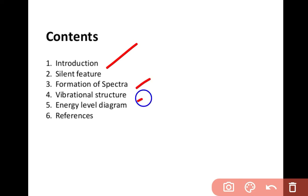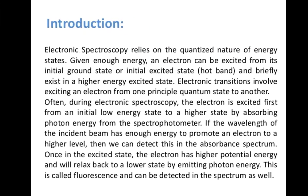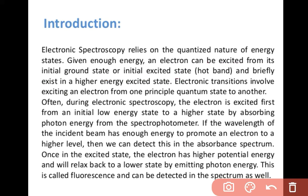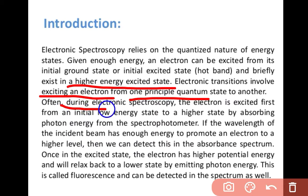Introduction: Electronic spectroscopy relies on the quantized nature of energy states. Given enough energy, an electron can be excited from its initial ground state or initial excited state (that is, a hot band) and briefly exist in a higher energy excited state. Electronic transitions involve exciting an electron from one principal quantum state to another, like n=1 to n=2, 3, 4, and so on.